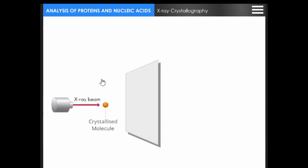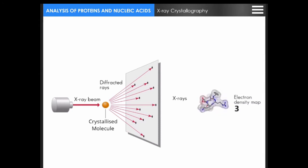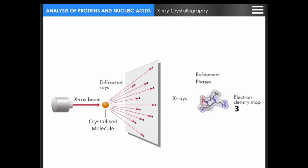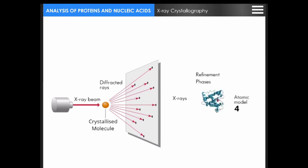X-ray crystallography is a technique used for determining the atomic and molecular structure of a crystal, in which the crystalline atoms cause a beam of incident X-rays to diffract into many specific directions. By measuring the angles and intensities of these diffracted beams, a crystallographer can produce a three-dimensional picture of the density of electrons within the crystal. From this electron density, the mean positions of the atoms in the crystal can be determined, as well as their chemical bonds, their disorder, and various other information.